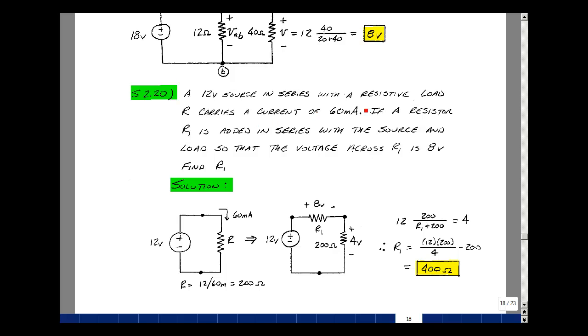A 12-volt source in series with a resistive load R carries a current of 60 milliamps. If a resistor R1 is added in series with the source and load so that the voltage across R1 is 8 volts, find R1.